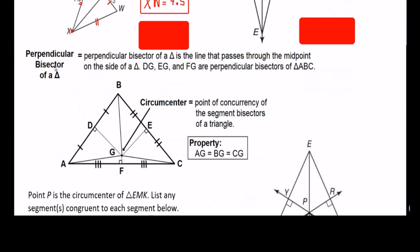Now let's talk about the perpendicular bisector of a triangle. A perpendicular bisector of a triangle is the line that passes through the midpoint on the side of a triangle. Right here, segment GD makes a 90-degree angle and it's cutting right in the middle of the side of the triangle, so that is a perpendicular bisector. Also, EG is a perpendicular bisector — I see the 90-degree angle and they're cutting right in the middle. Same thing with GF. So DG, EF, and FG are perpendicular bisectors of triangle ABC.